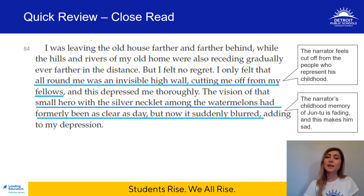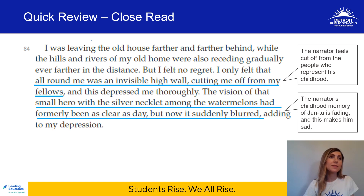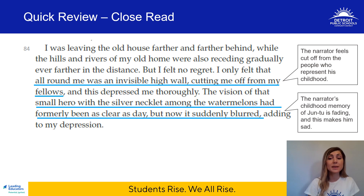I also underlined these lines: 'A small hero with a silver necklet among the watermelons had formerly been as clear as day, but now it suddenly seemed blurred.' He's speaking of his childhood memory of Zhen Shu and how it's fading. It leads me to believe that he wants to see it clearly. This also saddens him — that he can't put himself back in those days to appreciate the people around him, their relationships, and his old home in the same way.